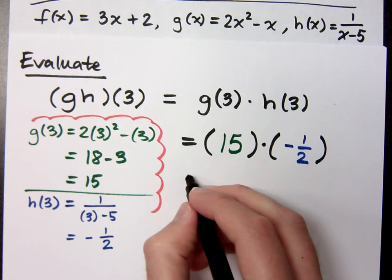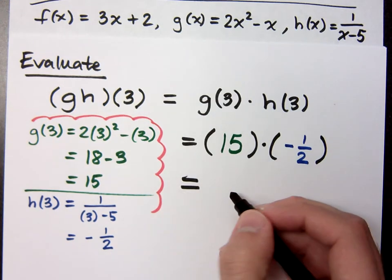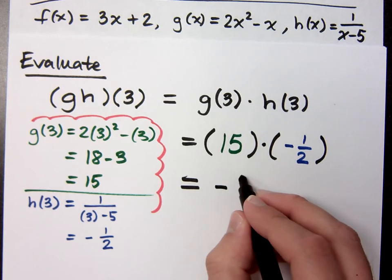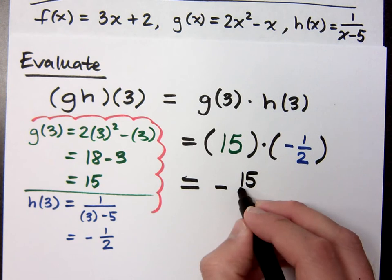So I know those of you out there appreciate multiplying with fractions, and what do you get? 15 times negative 1 over 2. Negative 15 halves.